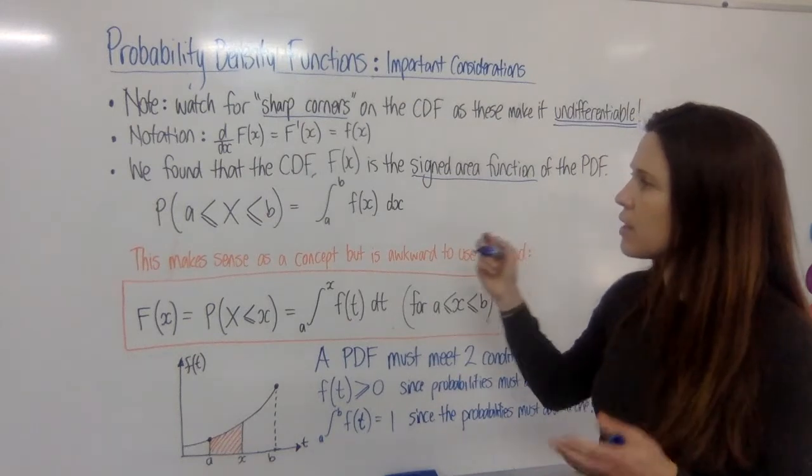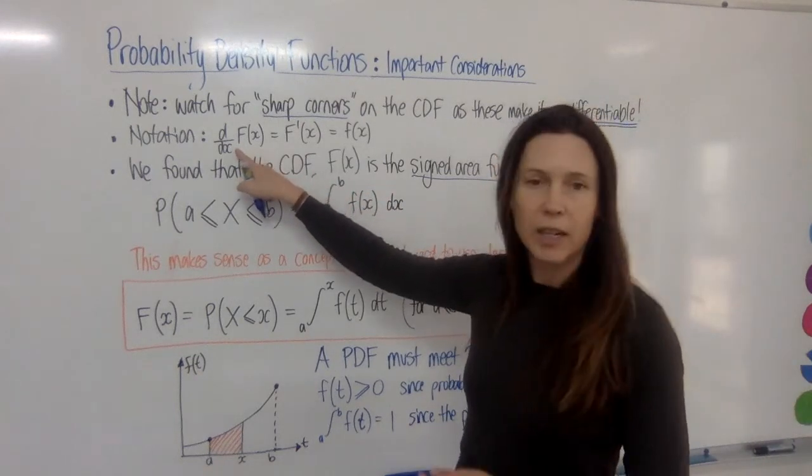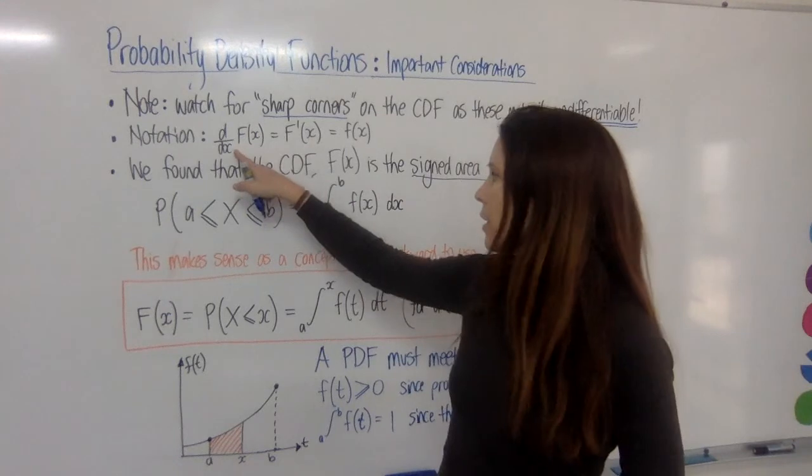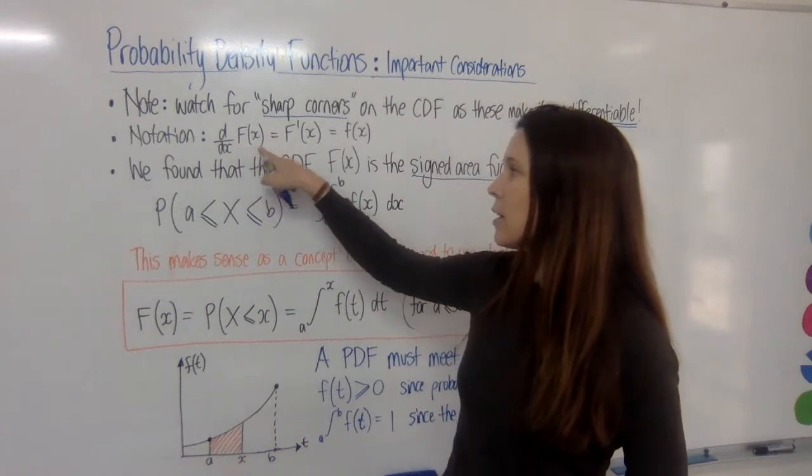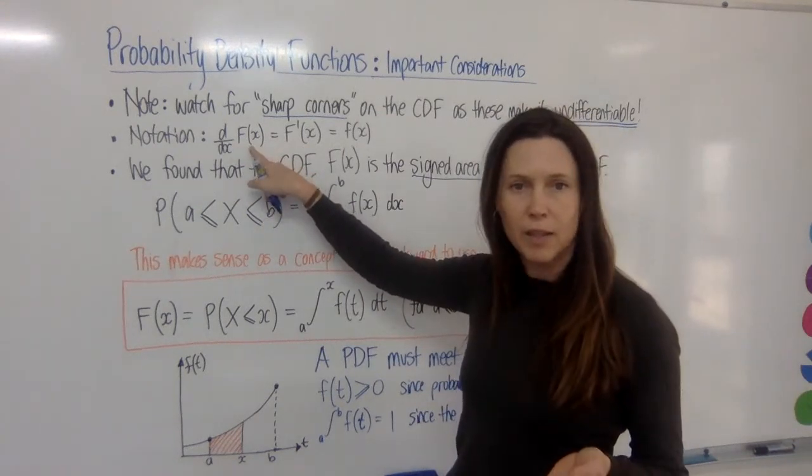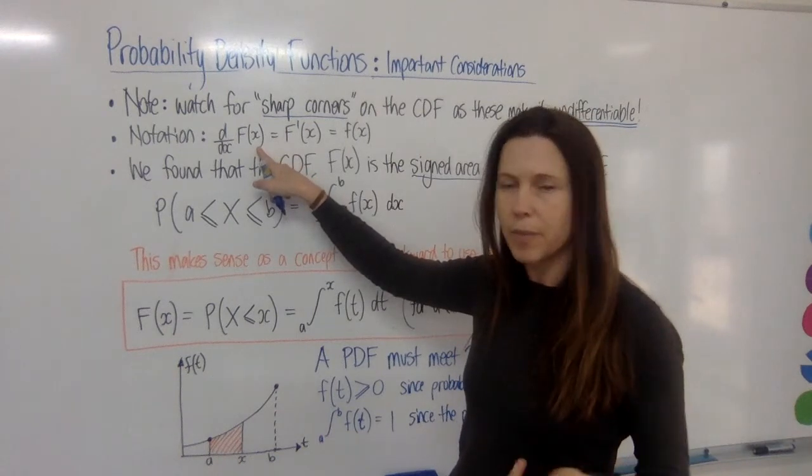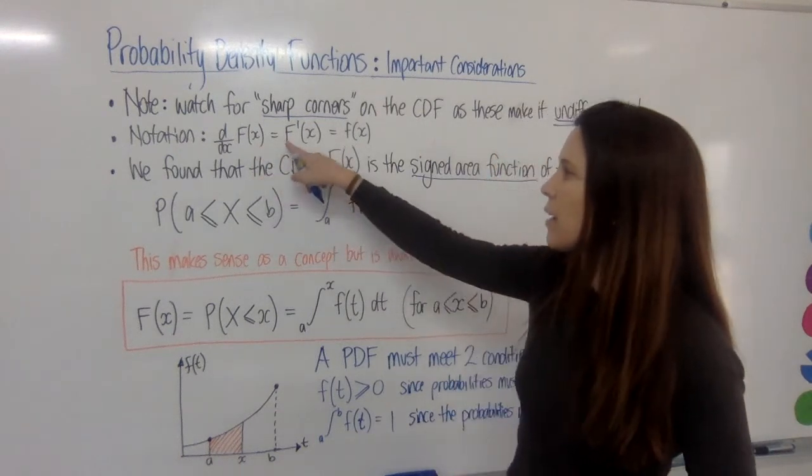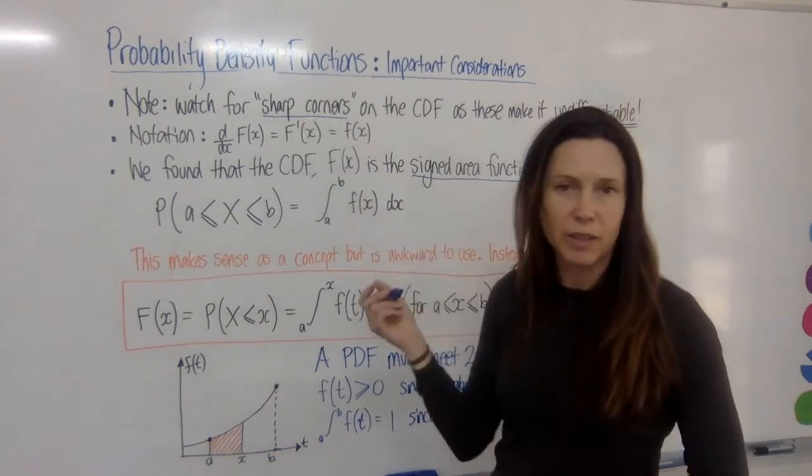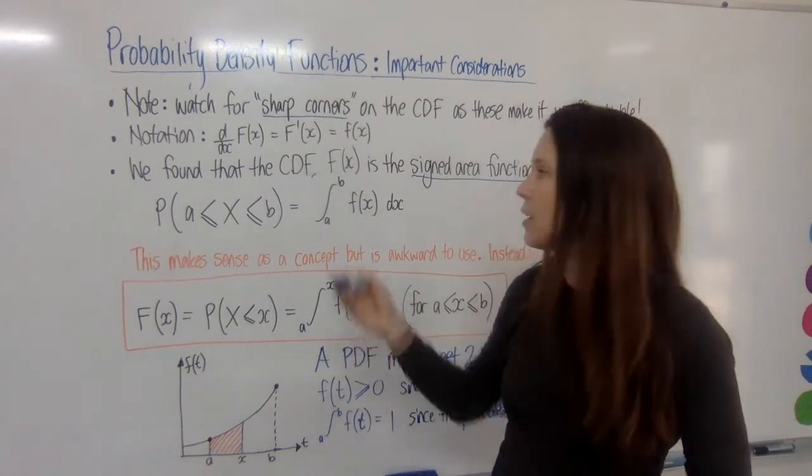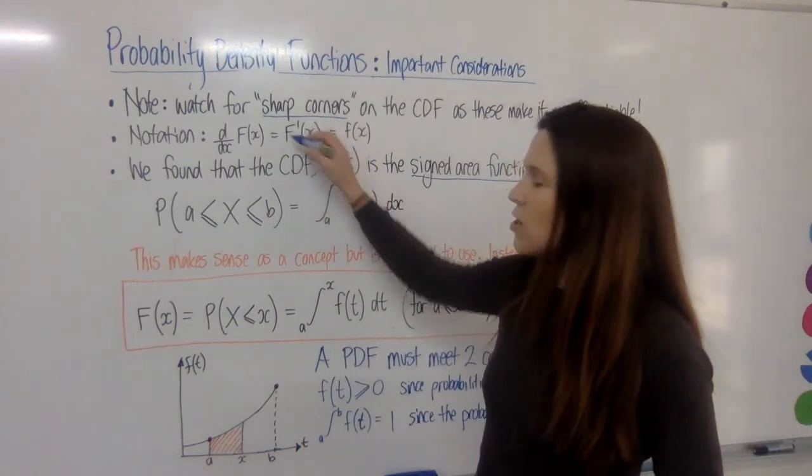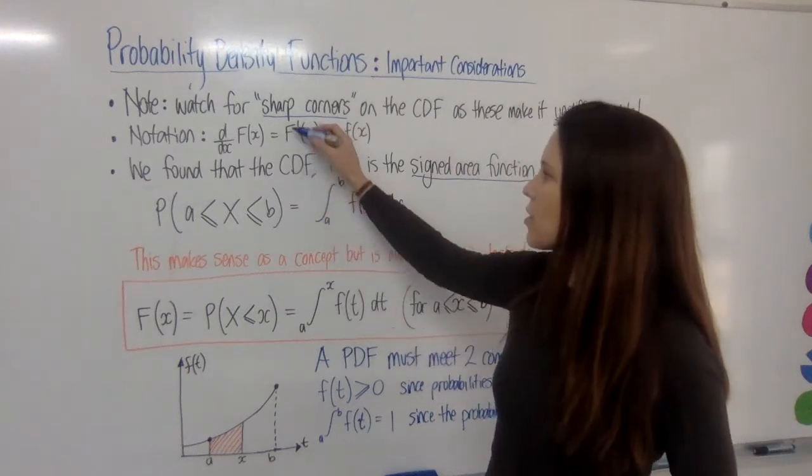Another thing with the notation, we've seen that if you differentiate, in other words you would d/dx something, if you differentiate big F of X, and this is our primitive function or our CDF, another way of writing that would be to just put a little dash on it. That means you've differentiated it, right?